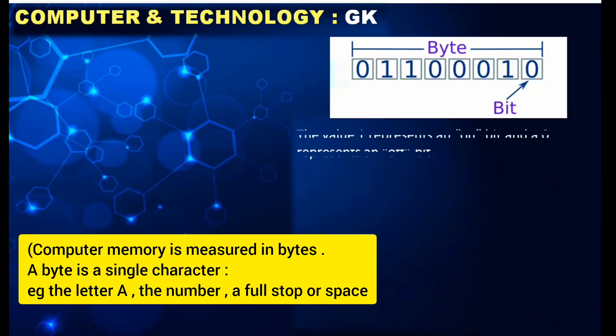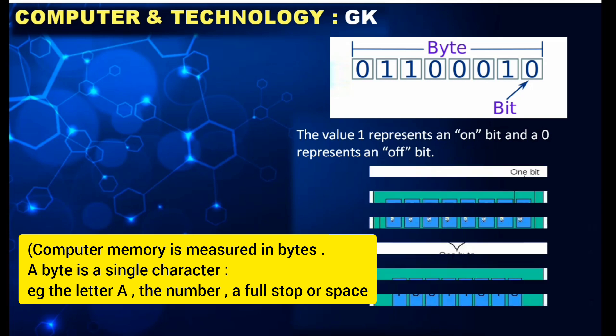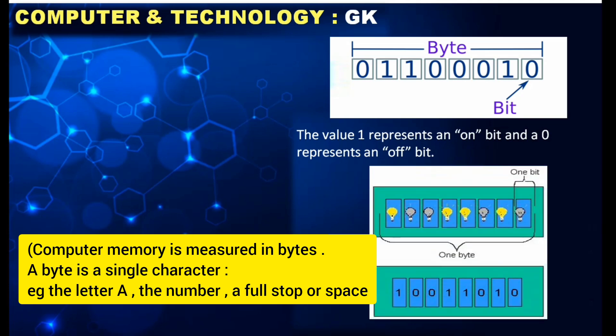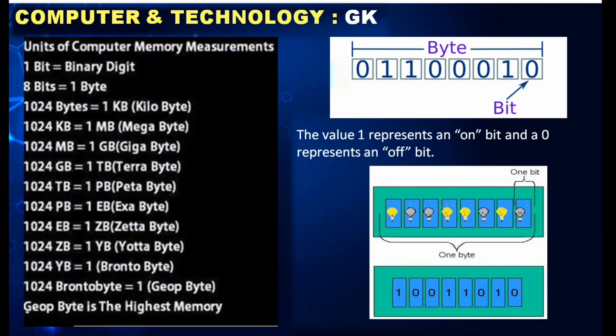Here, the value one represents an on bit and zero represents an off bit. We can see the units of computer measurements. One bit is a binary digit, and eight bits is equal to one byte.